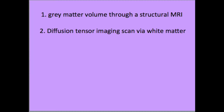The second measure was to determine potential downstream effects on connectivity through a diffusion tensor imaging scan via white matter tracks. White matter is mostly located in the inner area of the brain, containing the axons of the neurons. The myelination, which is mainly fat, gives it its white appearance.